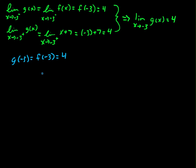And all together, therefore, g of x is continuous at x equals negative 3, since the limit as x goes to negative 3 of g of x is equal to 4, which is equal to g of negative 3.